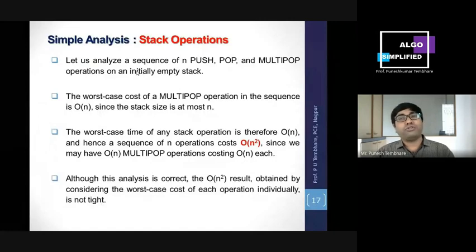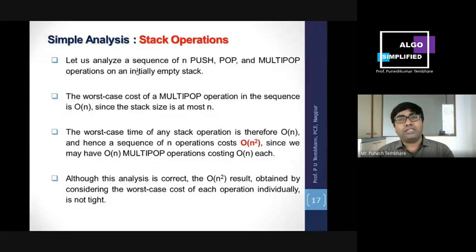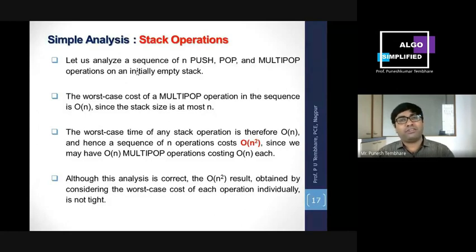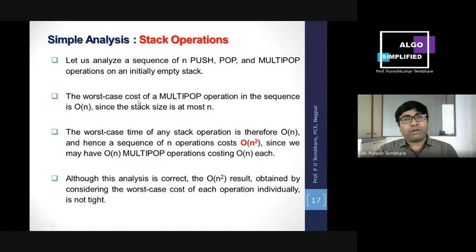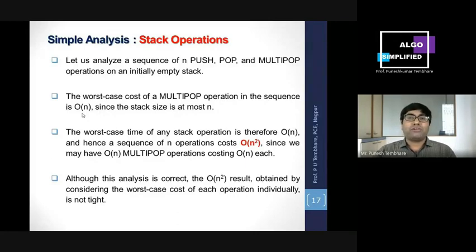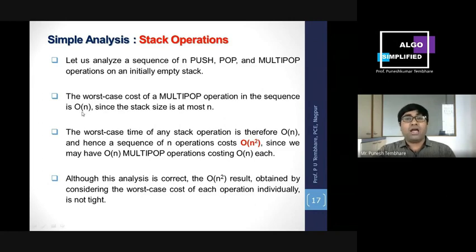Let us analyze the sequence of n push, pop, and multipop operations on an initially empty stack. In simple analysis: if multipop is performed, a single multipop operation has complexity O(n). Push has complexity O(1), pop has complexity O(1). The most complex instruction is multipop. Using simple analysis, the worst-case complexity comes out to O(n²), which is T(n). Now using the aggregate method, we can obtain a better upper bound.